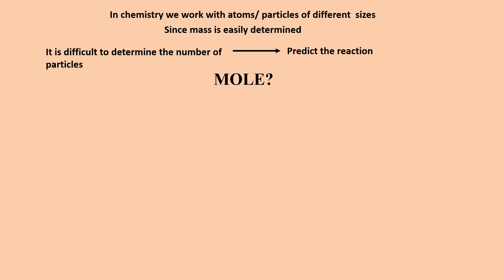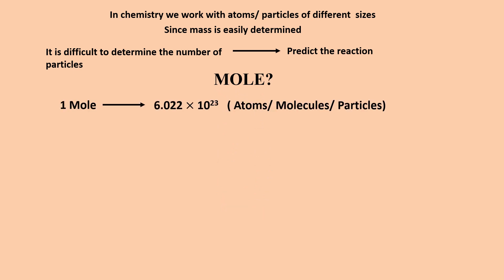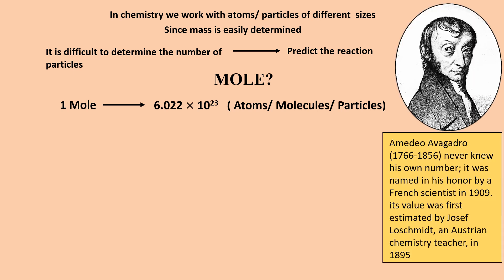So what is a mole? One mole is the amount of substance that contains exactly 6.02214076 x 10^23 atoms, molecules, or ions. This number is also known as Avogadro's number. It was named after the Italian scientist Amedeo Avogadro.